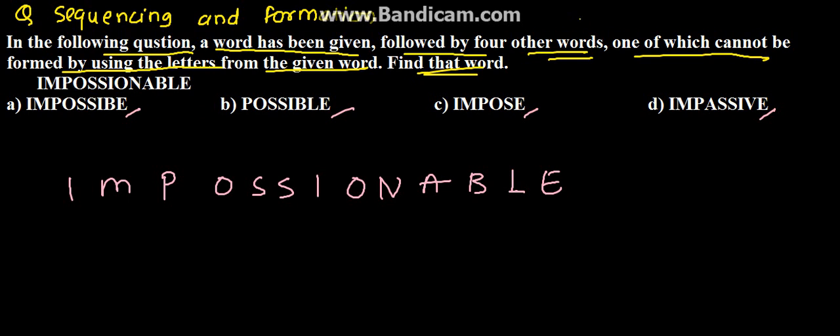We need to find which word cannot be formed. Let us begin with the first word: I-M-P-O-S-S-I-B-L-E. This word can be formed. Next we have POSSIBLE, P-O-S-S-I-B-L-E.